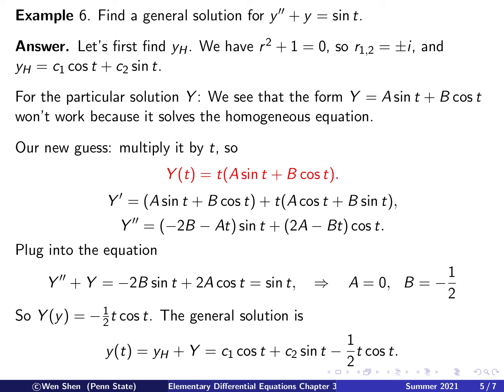With A equals zero and B equals negative one half, the particular solution has no t sine t term and gives negative one half t cosine t. The general solution is the homogeneous solution plus the particular solution: c1 cosine t plus c2 sine t minus one half t cosine t.